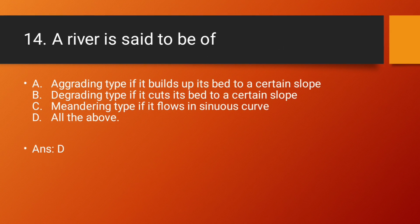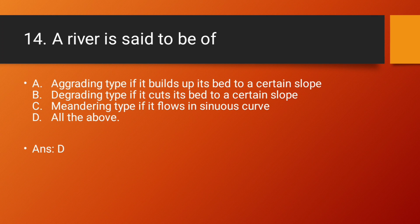Question number 14: A river is said to be of — Option A: Aggrading type if it builds up its bed to a certain slope. Option B: Degrading type if it cuts its bed to a certain slope. Option C: Meandering type if it follows a sinuous curve. Option D: All of the above. Answer: All of the above.